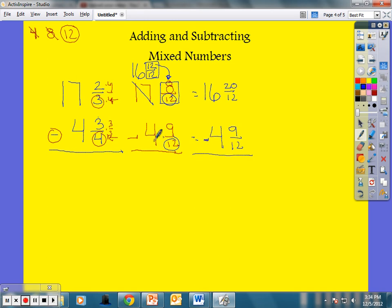Now I'll subtract. Make sure I know that I'm subtracting here. 20 minus nine, I could take nine away from 20. That gives me 11. I have 11/12. 16 minus four is 12. So now I have 12 and 11/12.